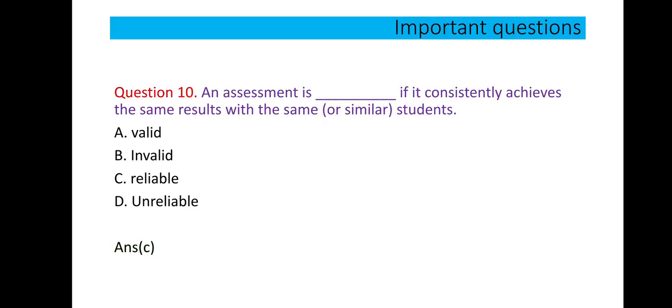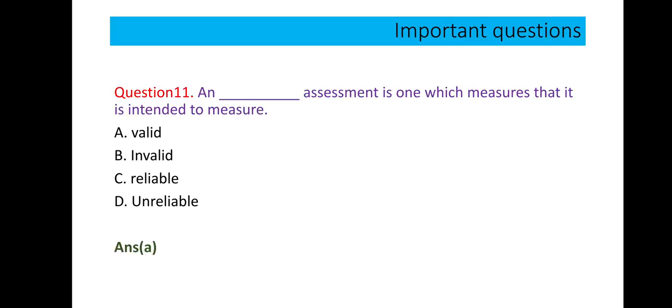Question number 10: An assessment is reliable if it consistently achieves the same result with the same students. Reliable means trusted, so option C is correct. Question number 11: A valid assessment is one which measures what it is intended to measure. Option A is correct.